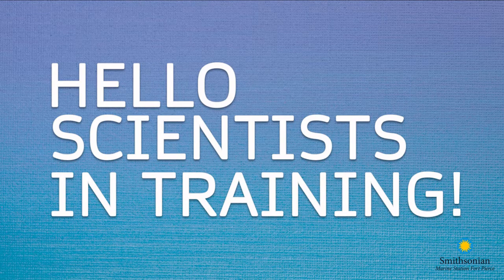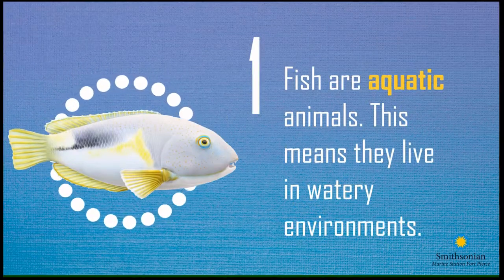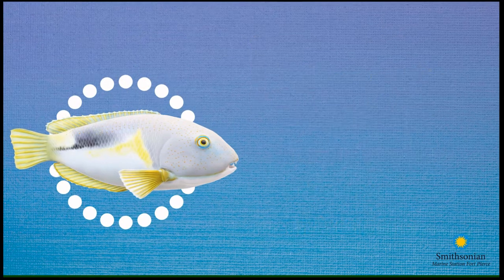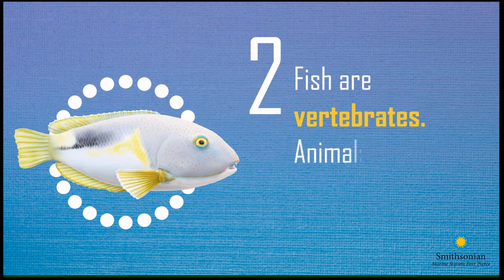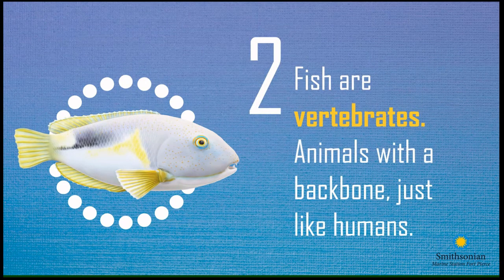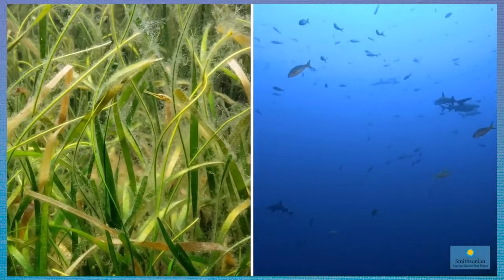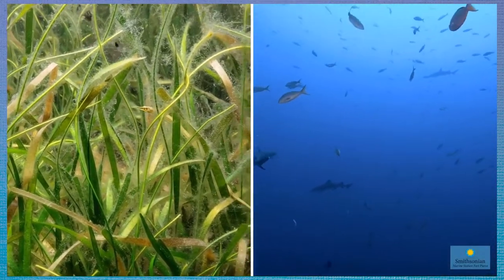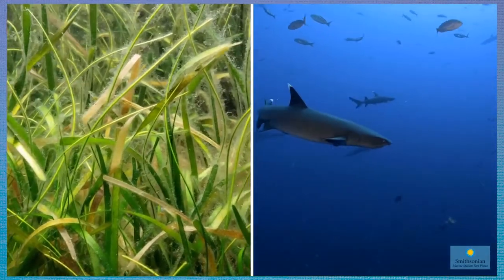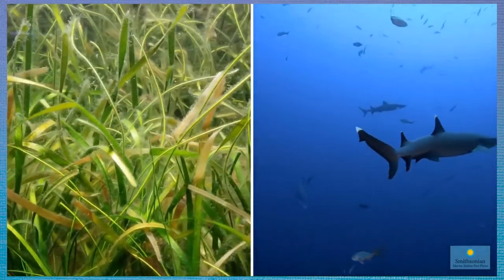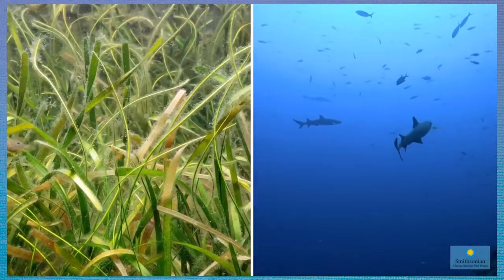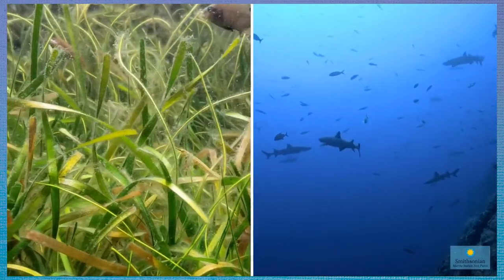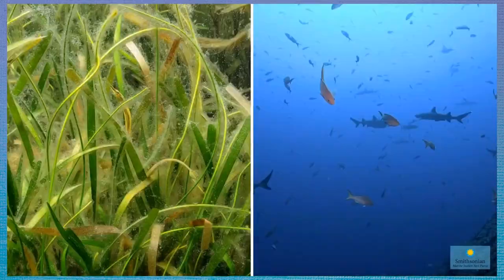Hello scientists in training, thanks for joining the Smithsonian Marine Station and Ecosystems Exhibits at Home Summer Camp experience. Our last video described the six characteristics shared by most species of fish. Today we will continue talking about the physical characteristics present in most species of fish, from pipefish smoothly camouflaging along the seagrass beds to strong swimming sharks navigating the open ocean. There are many species of fish, and although they can sometimes look and act very different from each other, many of them share a set of basic body structures.